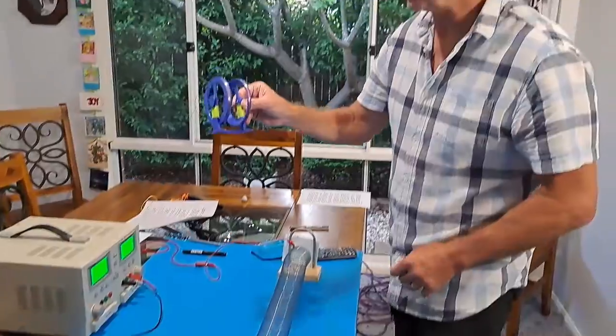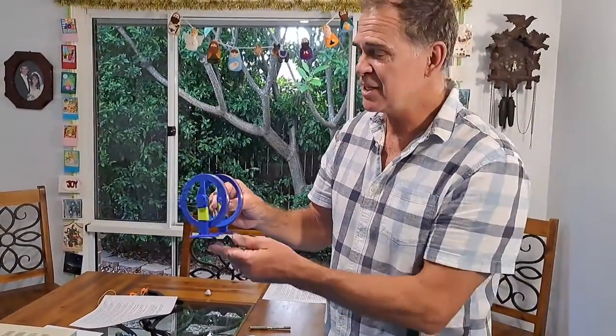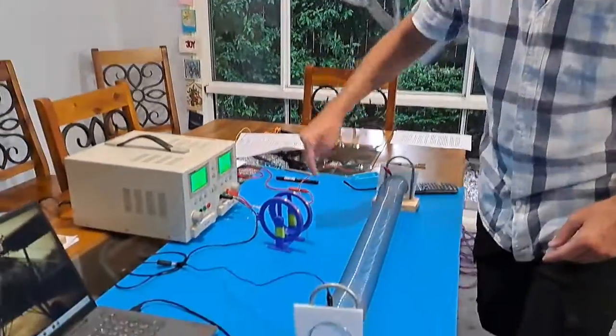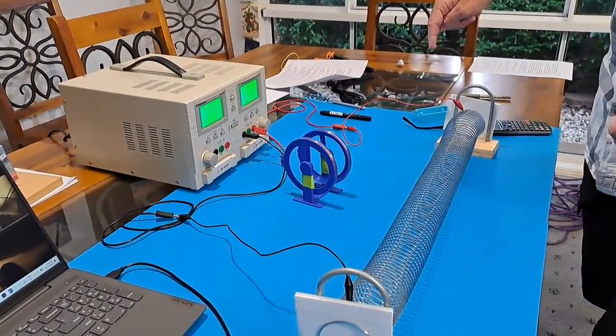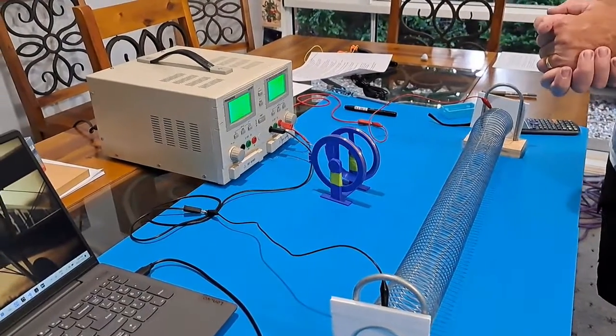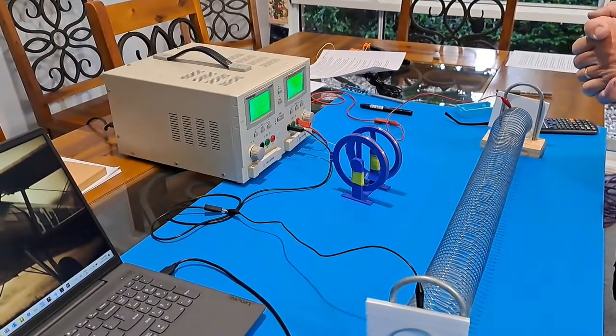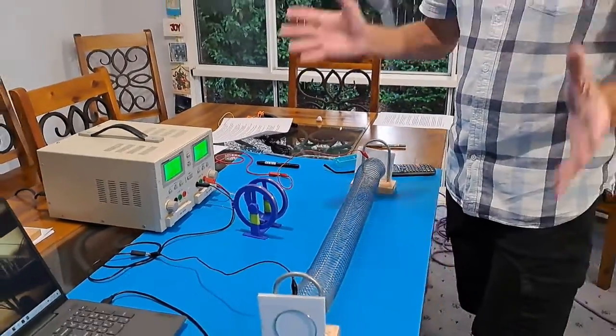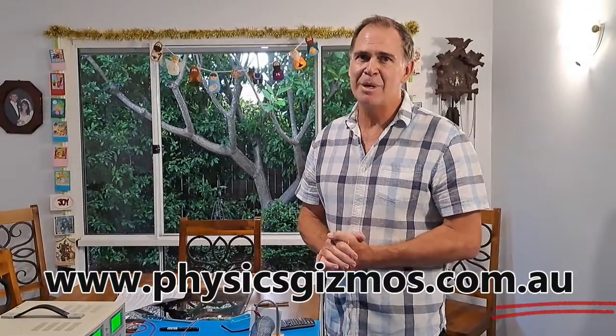There's a bunch of other experiments you could do. This video has already gone too long, so I won't do any more. A Helmholtz coil is a fantastic thing to investigate. I've had students investigate the magnetic field along the axis of a Helmholtz coil, and that gave really good results. But there's a bunch of other things you can do. I'll put more information on the website. I hope you want to buy one of these things. If you do, go to www.physicsgizmos.com.au, and there'll be information there about how you can get your hands on one or a class set. Hope you enjoyed the demo. Have a great day.